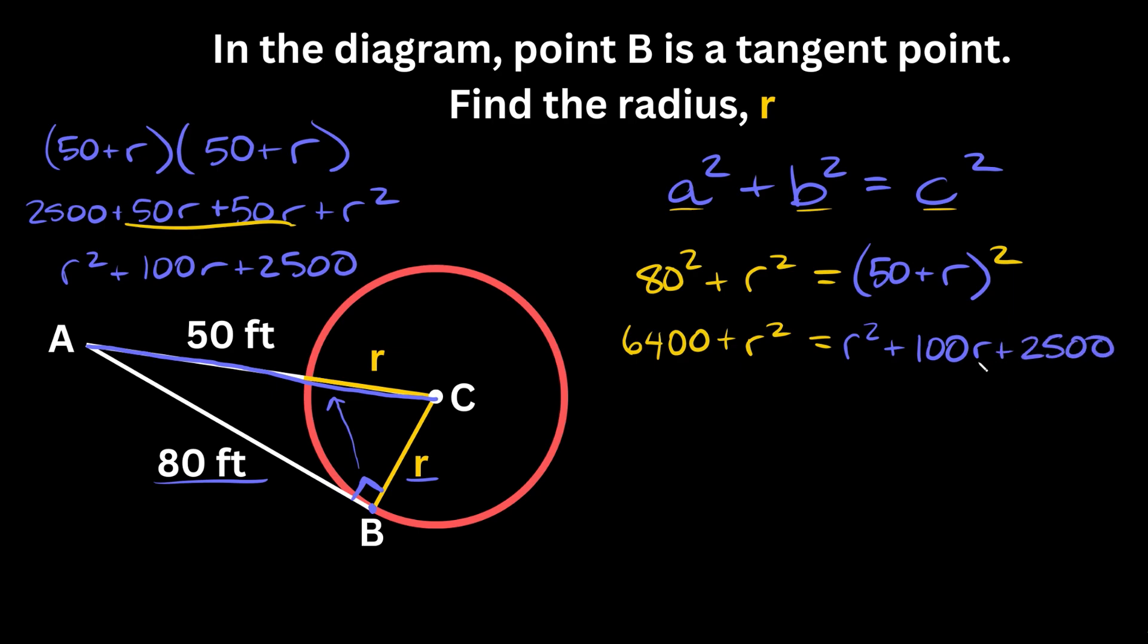We're trying to solve for R, so let's move some stuff to the left. Start with R². Subtract R² from both sides, so these cancel out. Got rid of one thing right there.